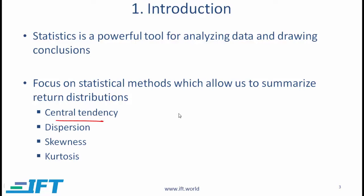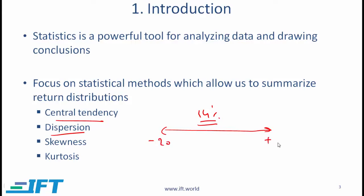Let's say that the stock market has returned on average 14% over the last 10 years. Obviously, we are concerned with that average number. We are also concerned with dispersion, which tells us how spread out the data has been. One of the simplest measures of dispersion is range. For example, if over the last 10 years the stock market return has ranged between minus 20% and plus 35%, that is also important for us to know.